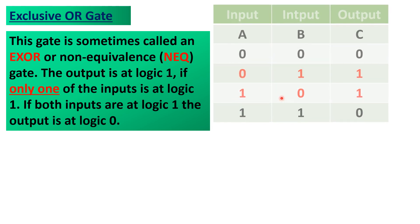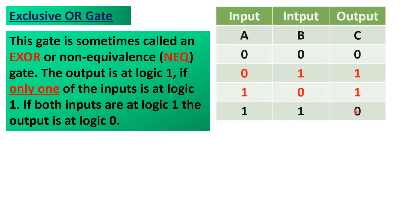I hope you won't get confused in distinguishing an OR gate and an exclusive OR gate. Because in an OR gate, when both inputs are at logic 1, the output must be at logic 1. But here, in an exclusive OR gate, when both inputs are at logic 1, the output is at logic 0. That is the main difference between the OR gate and the exclusive OR gate.